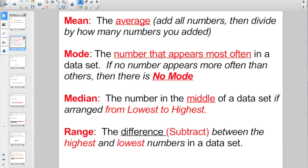Mode is the number that appears most often in a data set. But here's the tricky part that kids sometimes forget. If no number appears more often, then there's no mode.